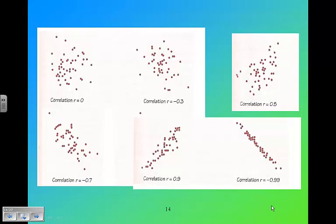Bottom left corner, they're getting even more tightly grouped, but going downward, so negative 0.7. Middle bottom, very tightly compacted, going up, so 0.9. And then the one on the right-hand side you can see is practically a straight line in the negative direction. That's a negative 0.99.